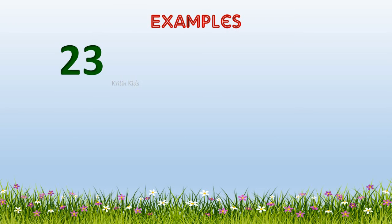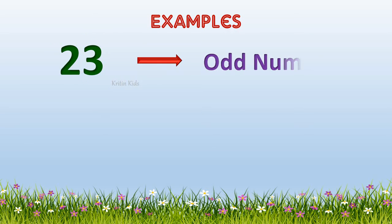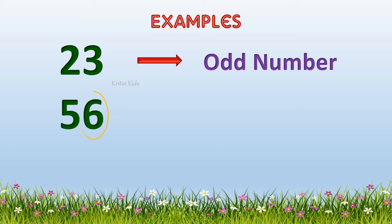Now, let's see some examples. Here we have number 23. We should check the right-hand side, which is called the one's position or the unit position number. If this number is odd, then the whole number becomes odd. Here it is three, and three is an odd number, so 23 is an odd number. Let's see another example: 56. Here we have six on the unit position. Six is an even number, so 56 becomes an even number.